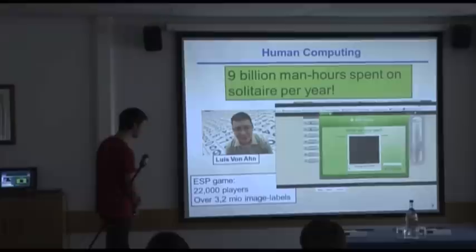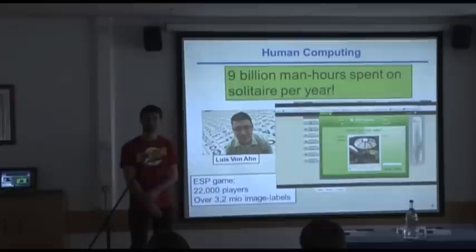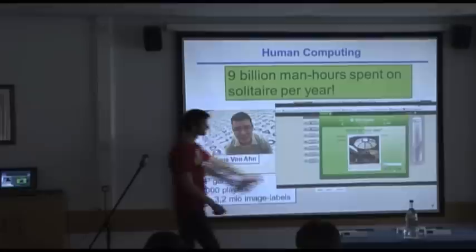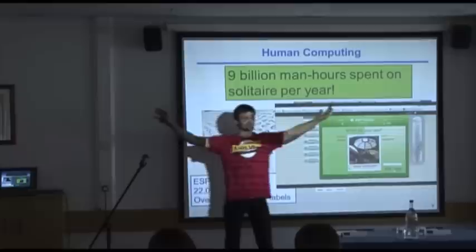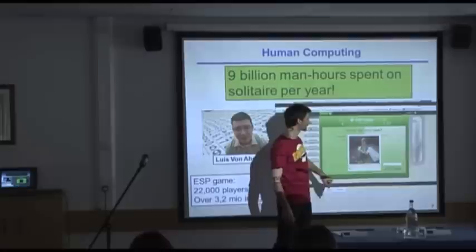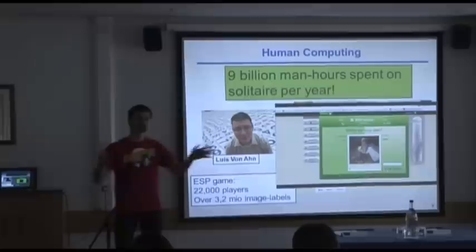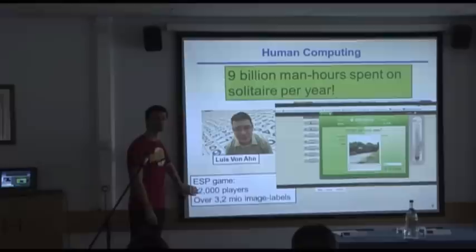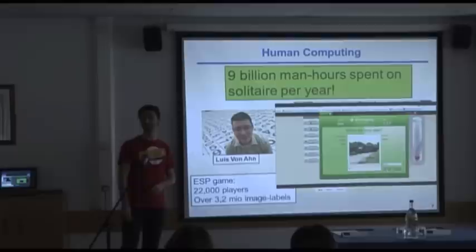One of the games he has is called the ESP game. It's all about labeling images on the internet. Having a two-player game can make people do fairly trivial tasks: you're presented with a picture and two players around the internet are supposed to both come up with the same name for that picture. We get a picture of a baby, I type 'baby', if the other player also types 'baby' we get points. He has more than 20,000 people playing this, and the mission is to put a label on every image on the internet.